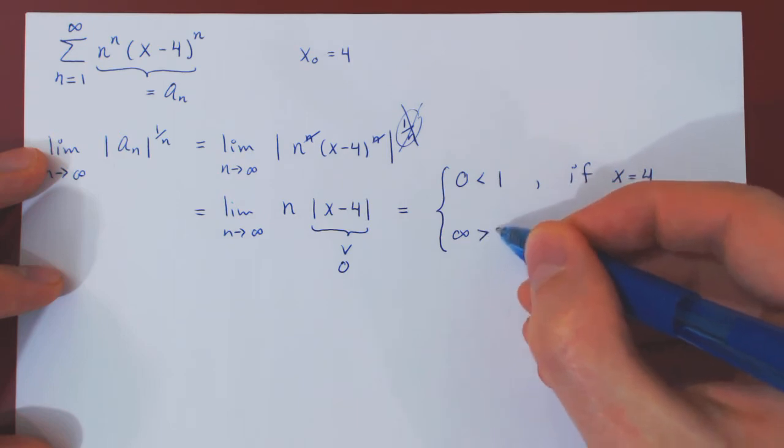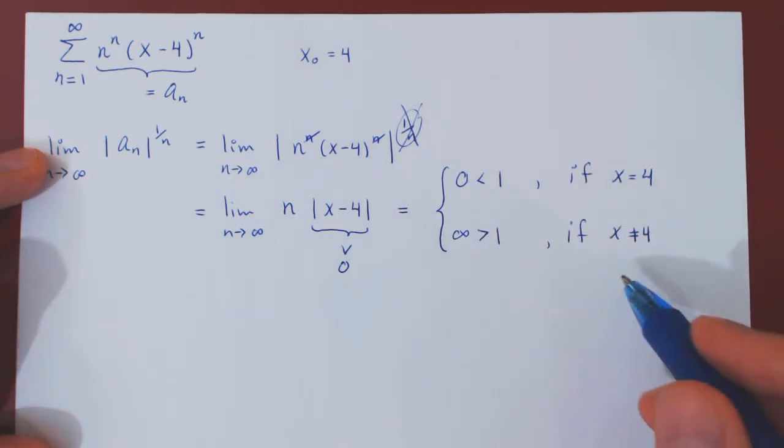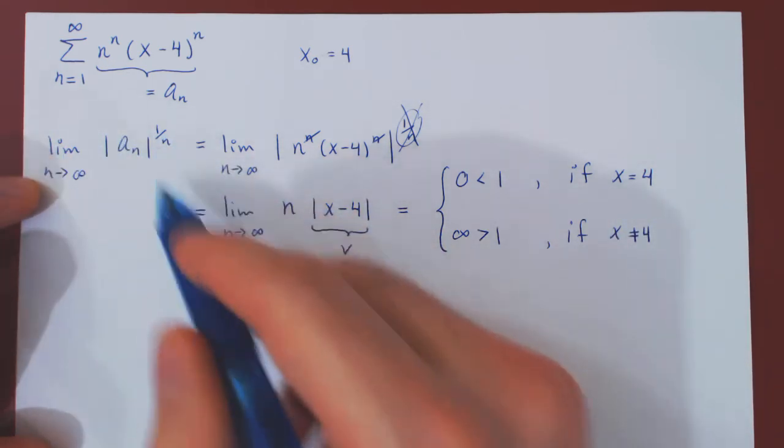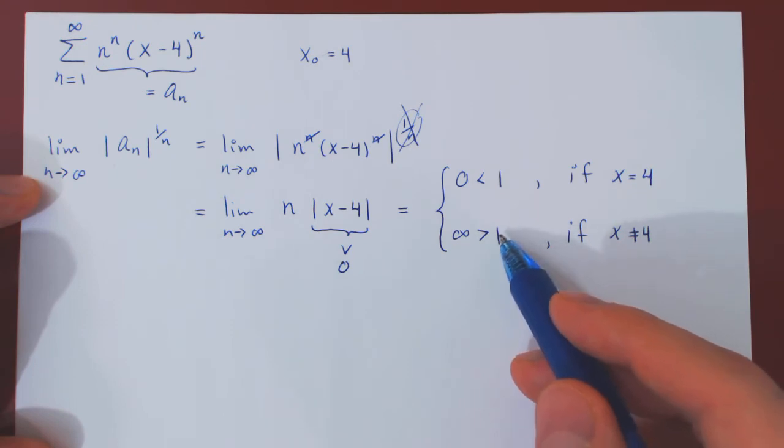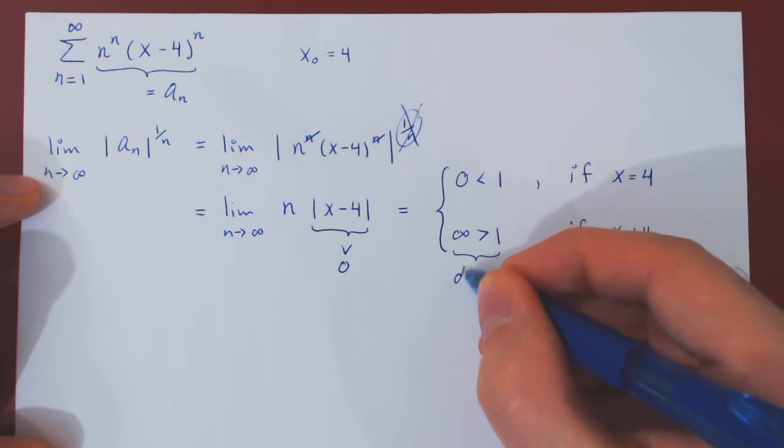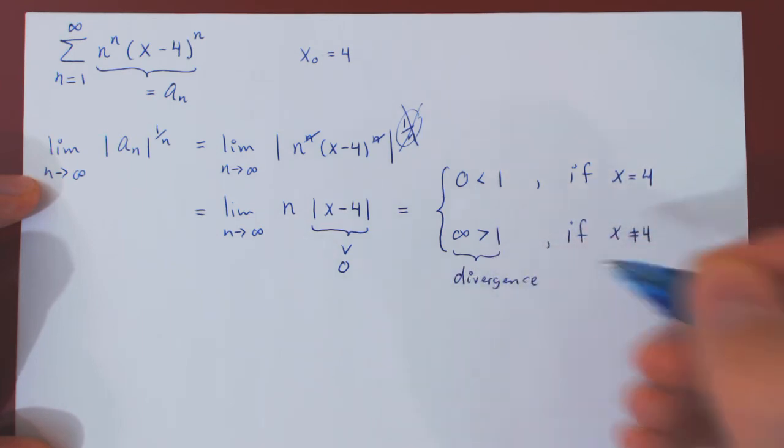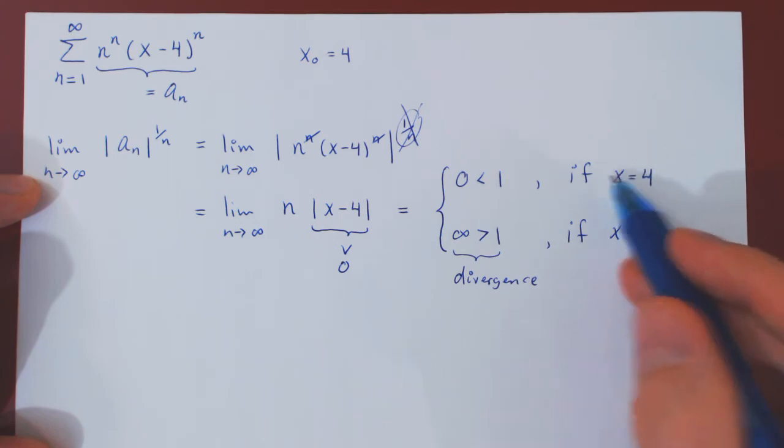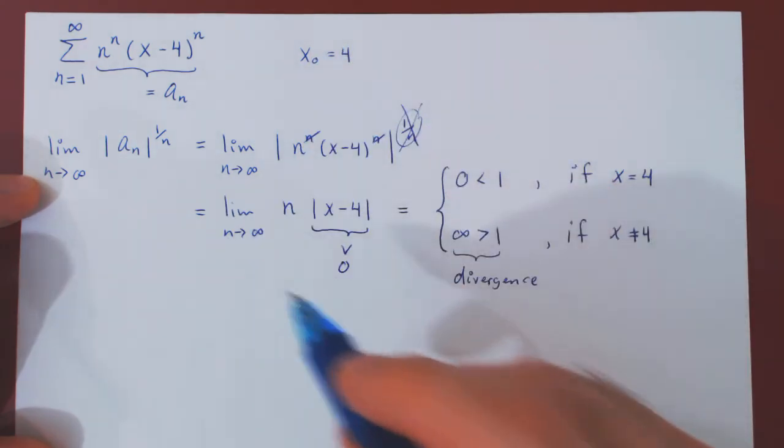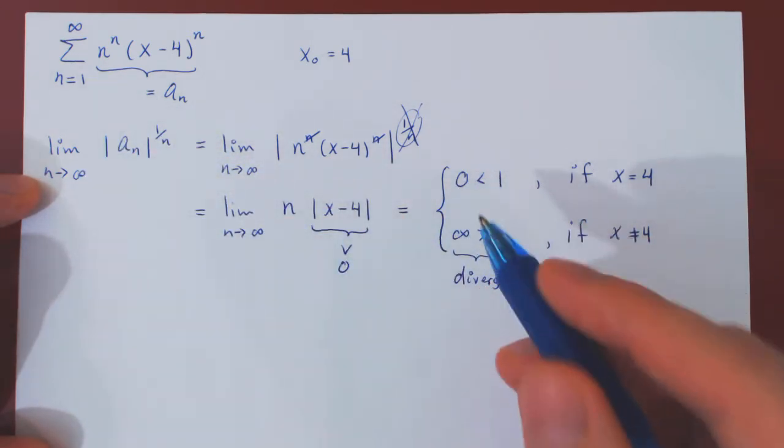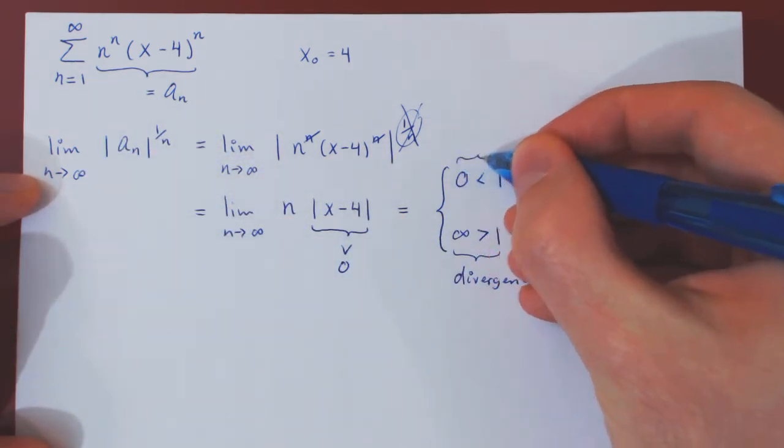a positive multiple of n will also tend to infinity, which is clearly larger than 1. And so you see, for all values of x that are different than 4, the limit of the root test is larger than 1, therefore returns divergence of the power series. Only in the case when x is equal to 4, its center, will the limit of the root test be strictly less than 1, in which case we have convergence.